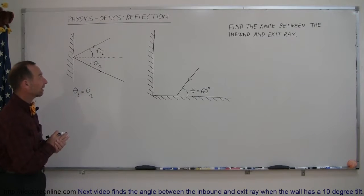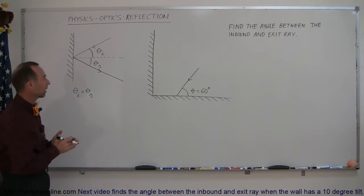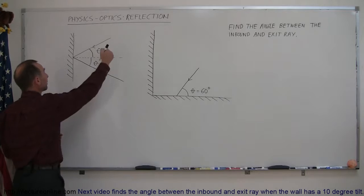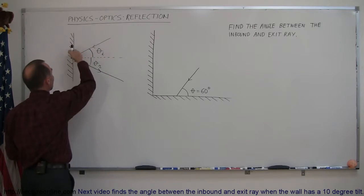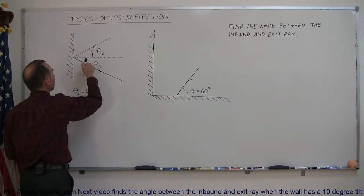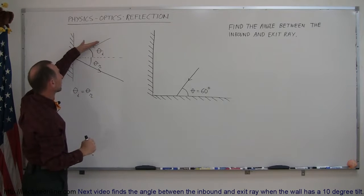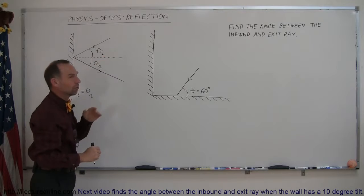First topic in optics is reflection, reflection of light against a mirror or a shiny surface. The only thing we need to know about reflection is that whenever we have an inbound ray reflecting off a shiny surface like a mirror, the angle of incidence is defined by the angle between the incoming ray and the normal line to the surface.